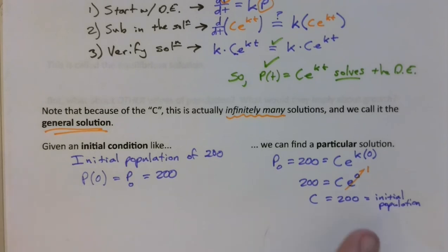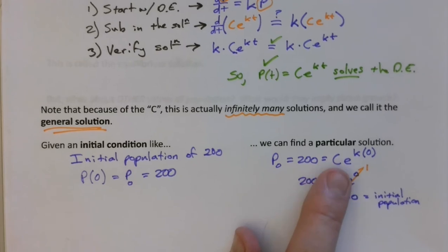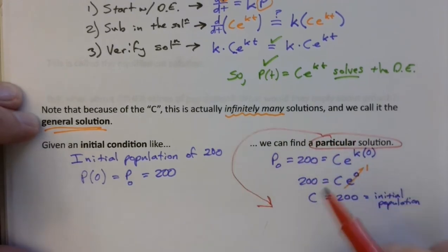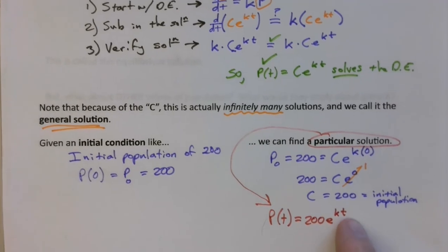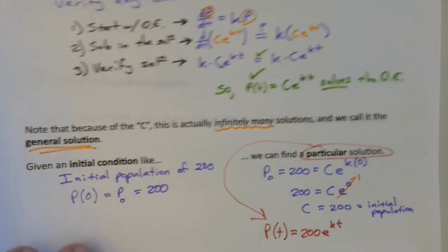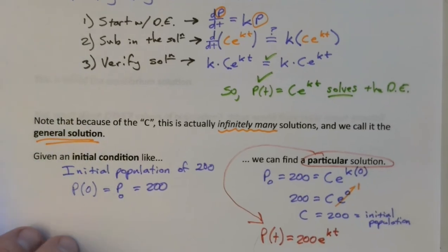So that means in any situation like this where we have exponential growth, any time we want to throw in an initial population, we just substitute it right in there for the value C and then we have a model that predicts how this thing is going to grow. So after all is said and done, we have a particular solution that looks like this, P(t) equals 200e^(kt). Now we don't know what k is, that's the exponential growth constant, but whatever it is, this will model that growth. So we'll hit the pause button right here because the next page gets into some new material. So we'll run the next video after this point.